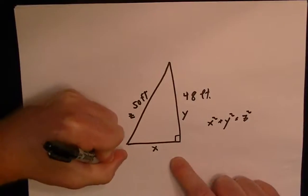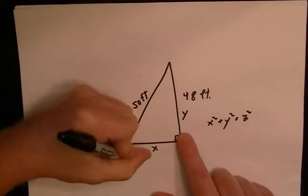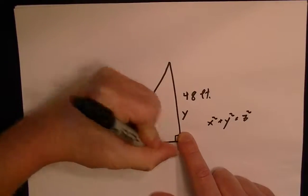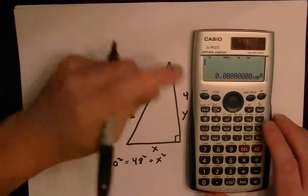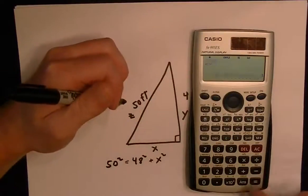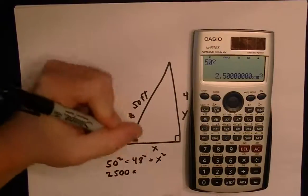So basically now we just have to fill it in. So we have 50 squared, that was our z, is equal to 48 squared plus x squared. We still don't know x. So we'll just do 50 squared is equal to 2500.